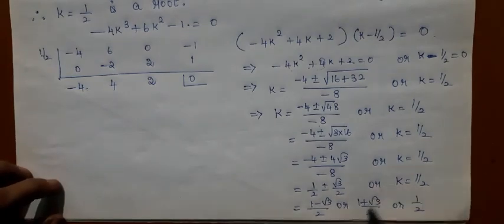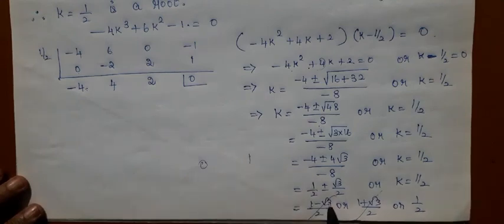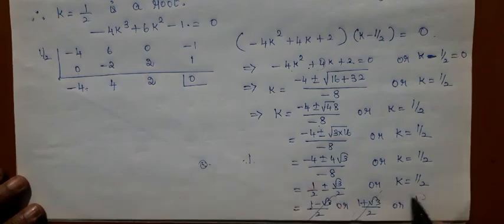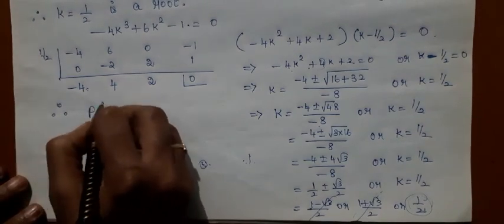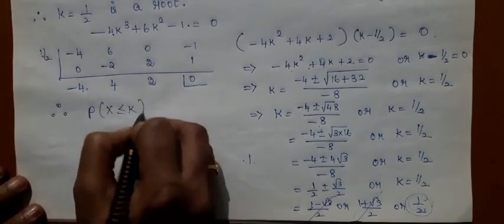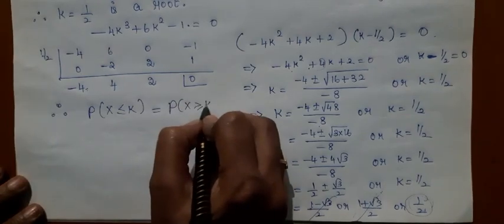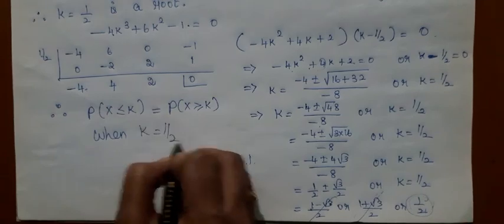However, (1 plus root 3)/2 is approximately 1.86 and (1 minus root 3)/2 is approximately minus 0.36. Both of these values lie outside the range 0 to 1, so they cannot be accepted. Therefore, only K equals 1/2 is valid. We conclude that the probability of X less than or equal to K equals the probability of X greater than or equal to K when K equals 1/2.